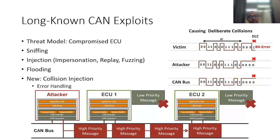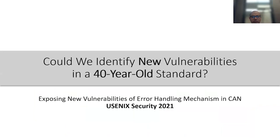I believed that attack opened the door to other attacks specifically targeting CAN's error handling and fault confinement mechanism. To me, having just started my PhD, that exploit was not the end of the story but the gateway to other vulnerabilities stemming from the same root cause. So the question becomes: how do we systematically look for and identify vulnerabilities in a 40-year-old standard?